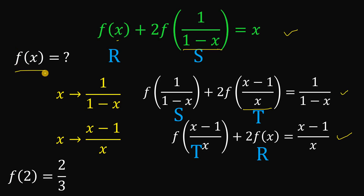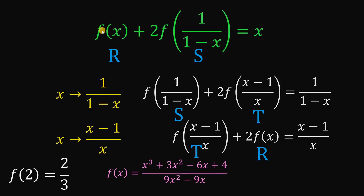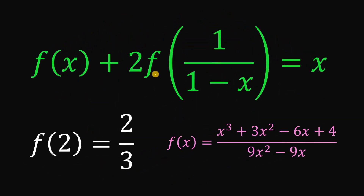Using the same process as before to solve for the value of f of 2, we get the value of f of x. You can verify that f of x equals x cubed plus 3x squared minus 6x plus 4, all over 9x squared minus 9x. At this point, you can verify that substituting x with 2 gives f of 2 equals 2 over 3. Therefore, given f of x plus 2 times f of 1 over 1 minus x equals x, the value of f of 2 is 2 over 3, and f of x is x cubed plus 3x squared minus 6x plus 4 all over 9x squared minus 9x.